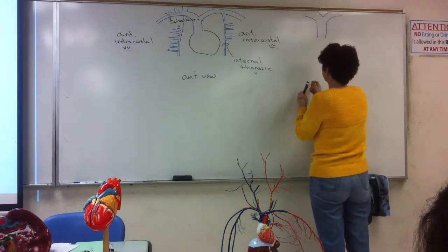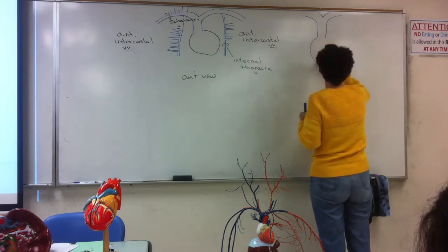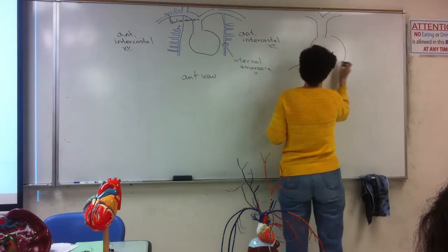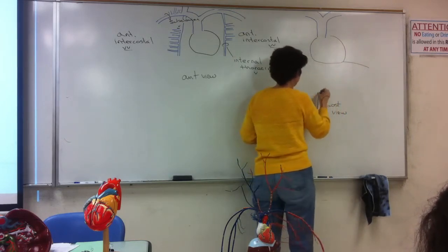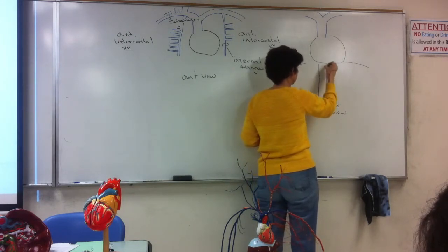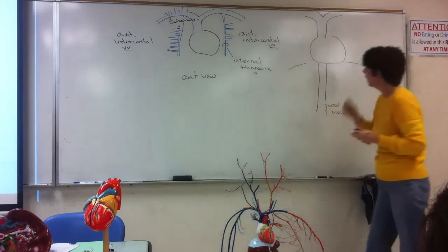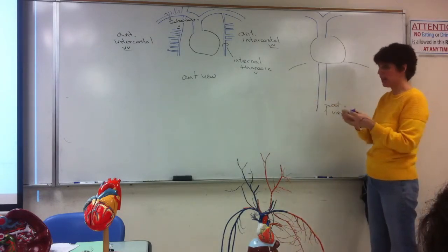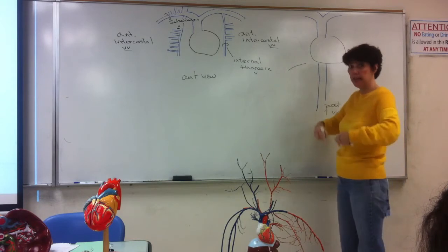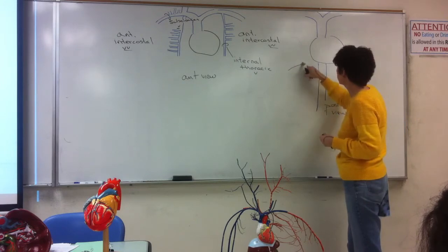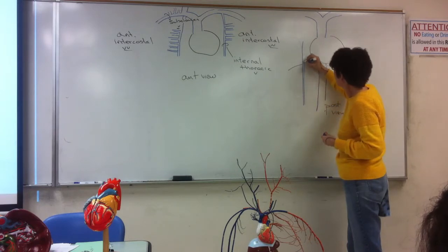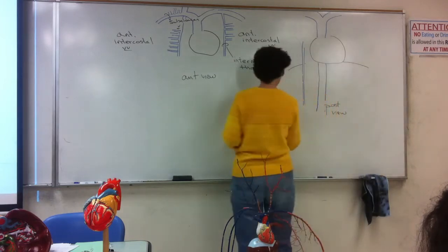We have the diaphragm, the heart resting on the diaphragm. The inferior vena cava is coming up from the abdominal wall. Starting in the abdominal cavity, we have veins that pass up the posterior abdominal wall along the muscle wall of the posterior abdominal cavity.